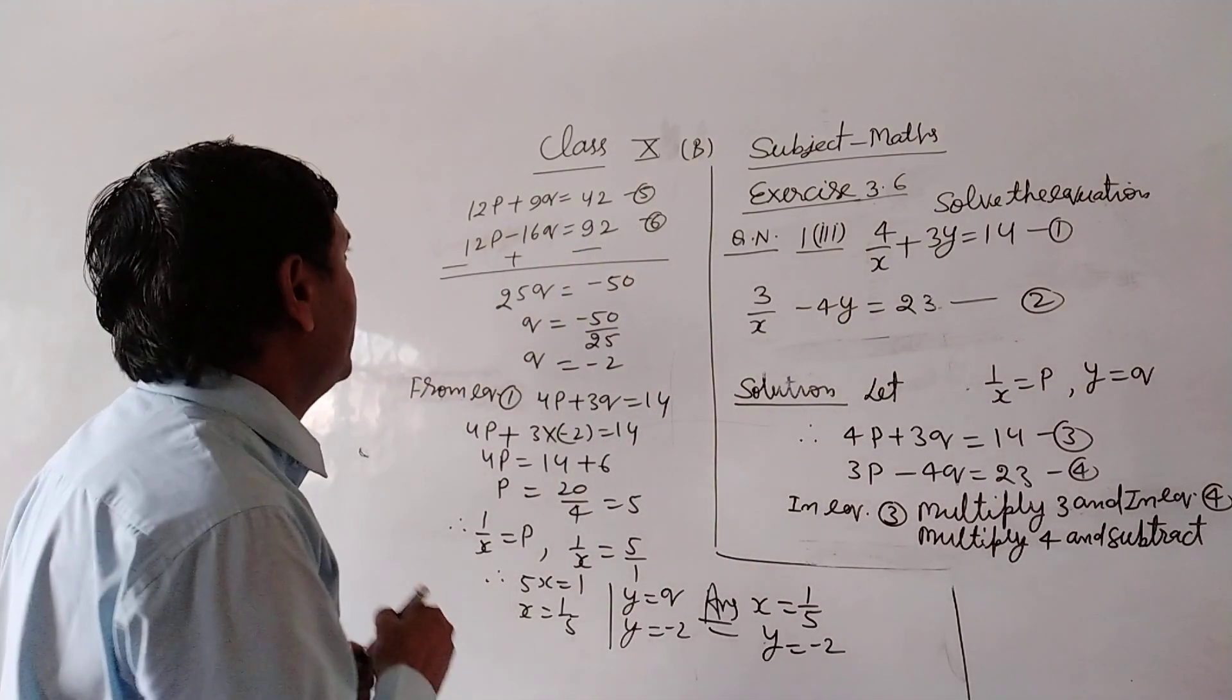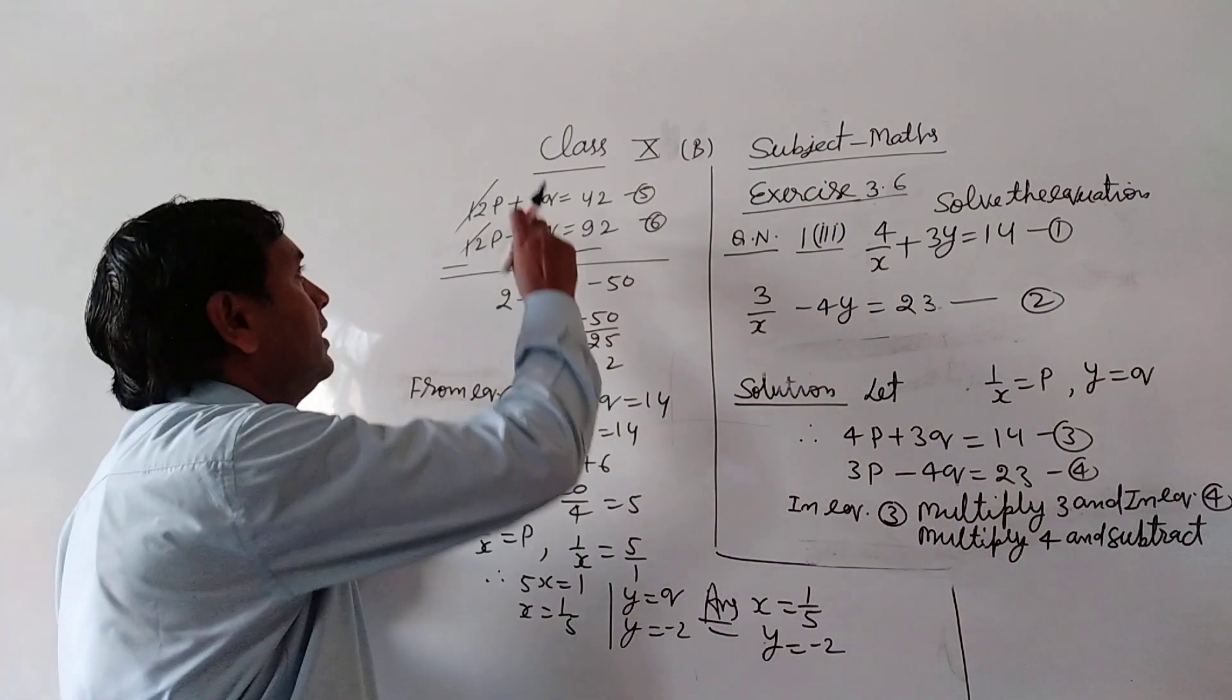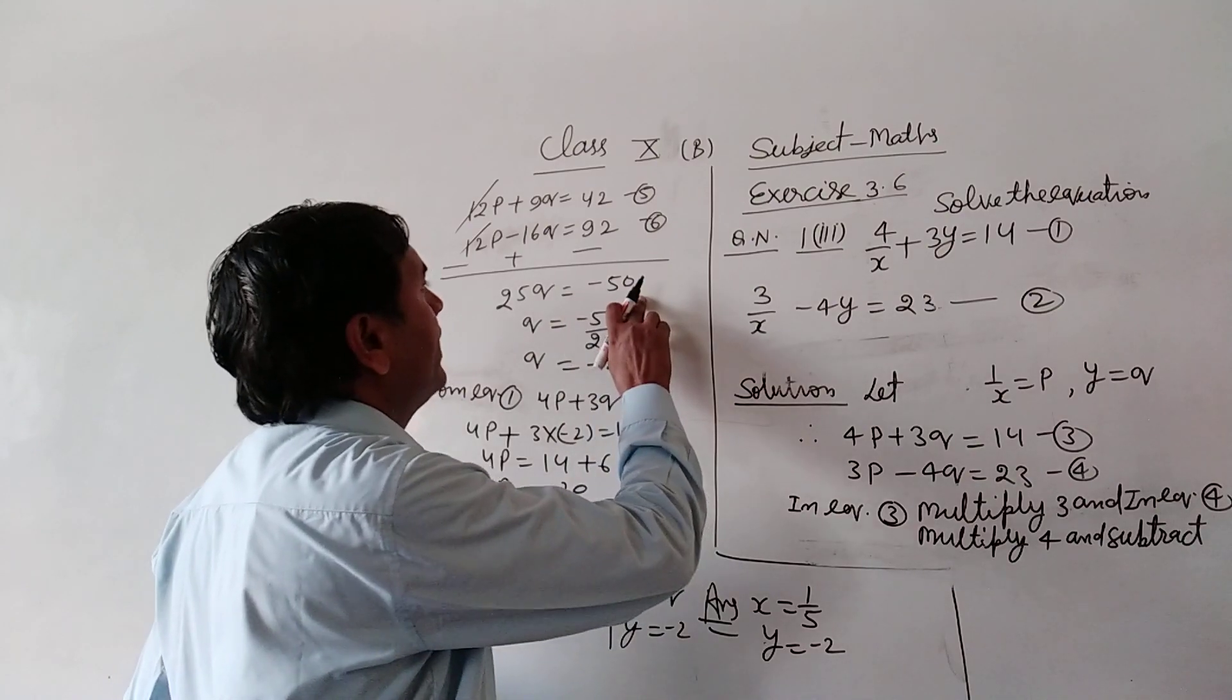Sign change, subtract. 12p minus 12p cancels. 16q plus 9q is 25q equals minus 50.